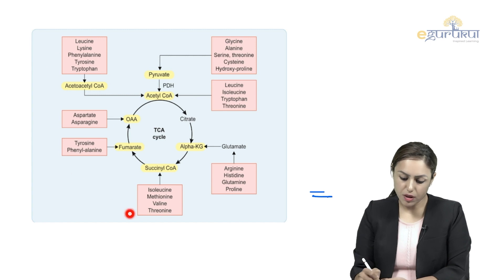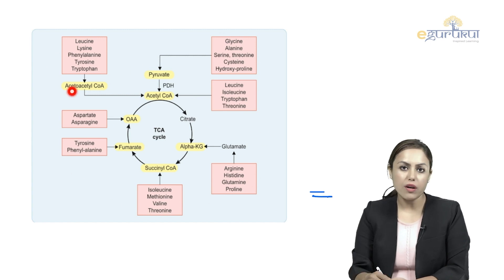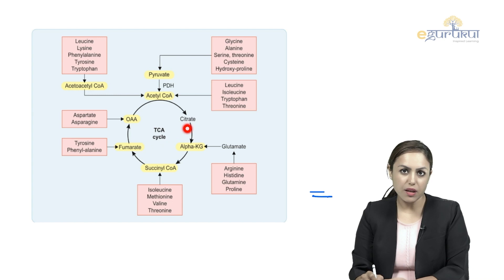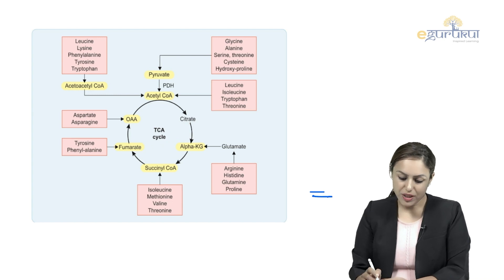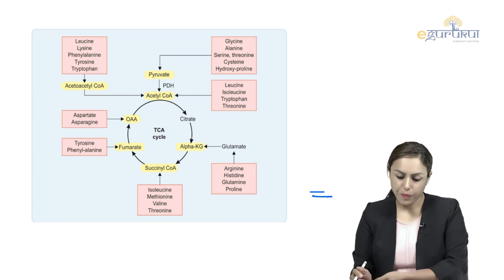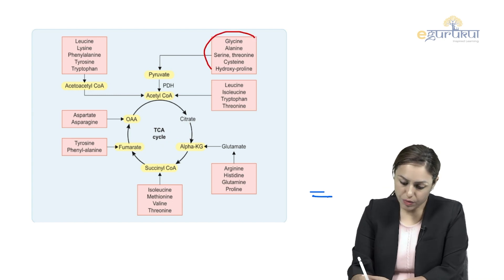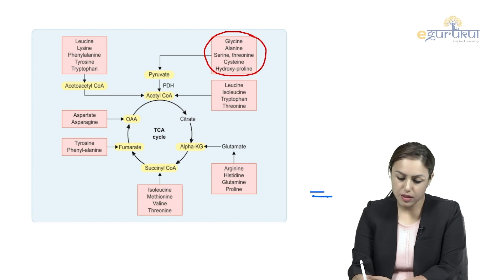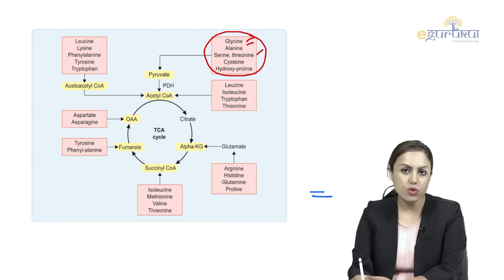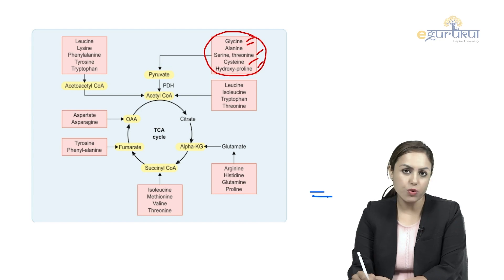Various amino acids are giving their end products at various steps in this TCA cycle. Look at these amino acids: glycine, alanine, serine, threonine, cysteine, hydroxyproline.